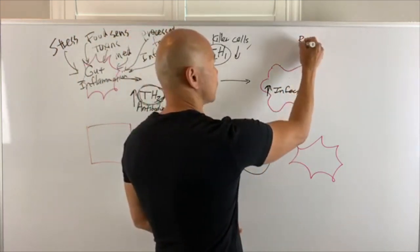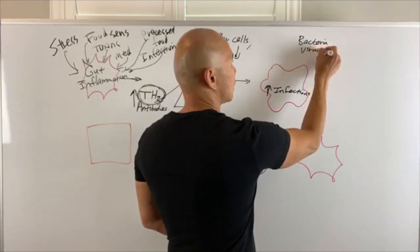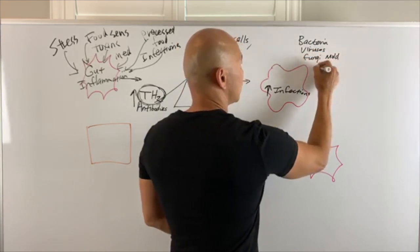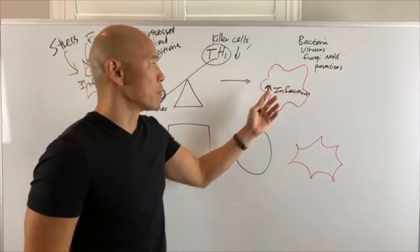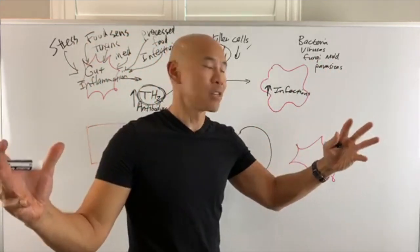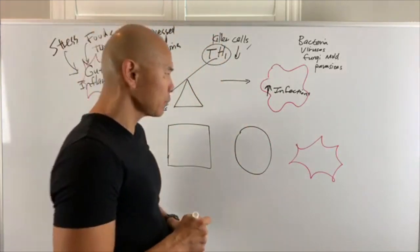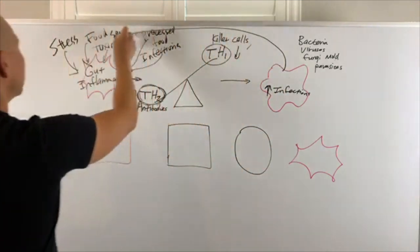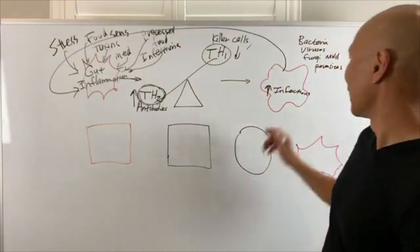Really, we should just say infections, period. So infections are going to start to increase, because you can't fight it off. Now this infection could be bacteria, viruses, fungi, or mold, and parasites. Because your immune system can't get rid of them, the infection load starts to get heavier. They can become more expansive. They start to expand.